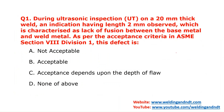Let us start with the question answer. Our first question is: during ultrasonic inspection on a 20 mm thick weld, an indication having length 2 mm is observed, which is characterized as lack of fusion between the base metal and weld metal. As per acceptance criteria in ASME Section 8 Division 1, is this defect acceptable? So this question is related to code interpretation — you have an indication of 2 mm length characterized as lack of fusion.